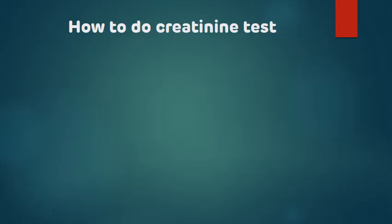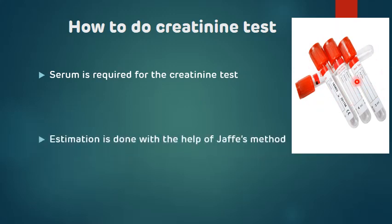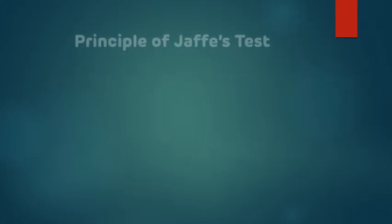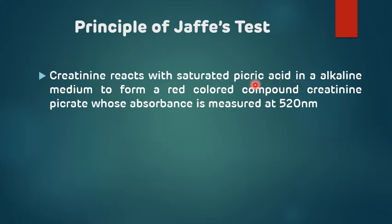To perform the creatinine test, we require serum, which can be separated from blood collected in a plain vacutainer. Estimation is done by a method called the Jaffe method. The principle of the Jaffe test is that creatinine reacts with saturated picric acid in an alkaline medium and forms a red-colored compound called creatinine picrate, whose absorbance is measured at 520 nanometers.